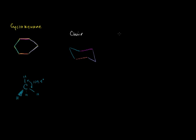Now another configuration that it could be in is called the boat configuration. If I were to put this in the boat configuration, looking at it kind of head-on, it would look something like this — drawn in purple at the ends. Now, you might be saying, Sal, you said carbon likes to form these tetrahedral or tripod-shaped bonds. I don't see those tripod-shaped bonds in either the chair or boat. Let me draw that boat end a little bit better — and to see the tripod shape, you just have to draw the hydrogens.